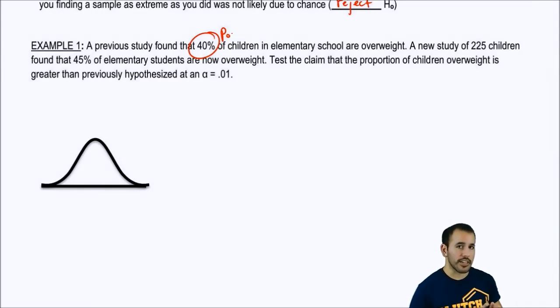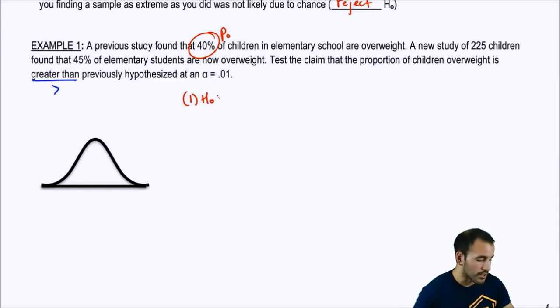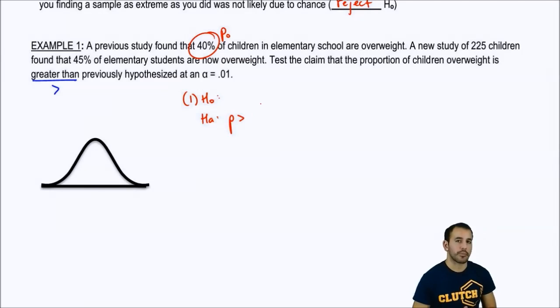So, here's our population proportion, our proportion from our null hypothesis. And we're testing, and nowhere in here is standard deviation, right? So, we know automatically we're dealing with proportions. But we're testing the claim that the proportion of children is greater than previously hypothesized. Greater than tells me what? Greater than falls on our alternate because it doesn't have an equal sign, right? So, P is greater than, and what was it previously hypothesized to be? It was supposed to be around 40%, right? So, 0.40. And, yeah, I mean, I mentioned this before as well, but percentages turn into decimals and statistics.